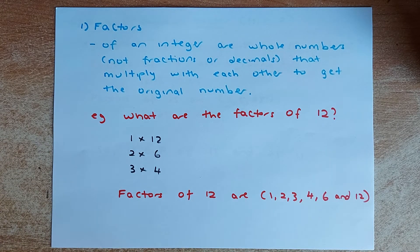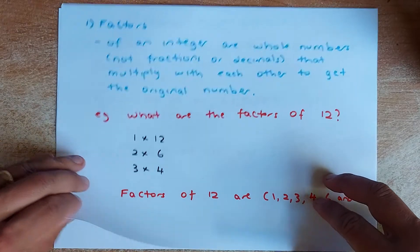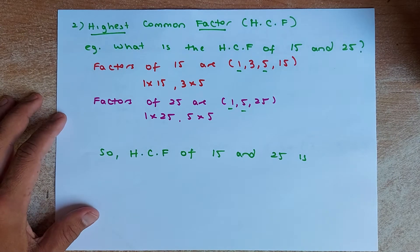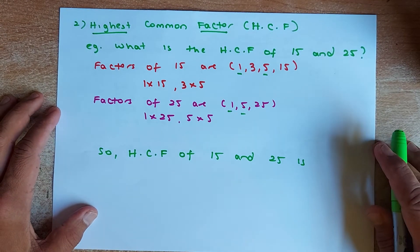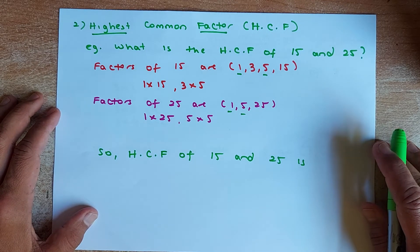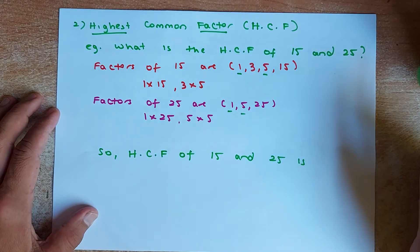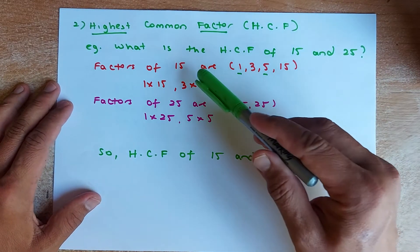That was straightforward. Now we are going to know what's the difference between factors and highest common factors. So if I were to ask you what is the highest common factor of two numbers, 15 and 25, the same procedures occur.